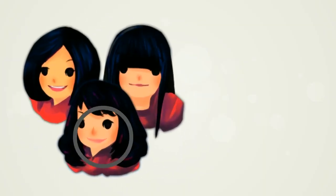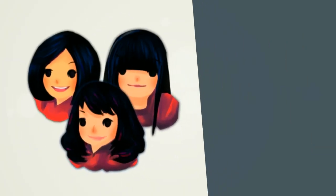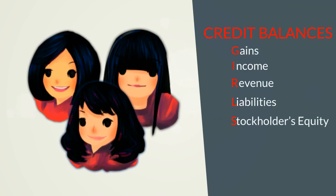The mnemonic GIRLS represents those accounts normally with a credit balance: Gains, Income, Revenue, Liabilities, and Stockholders' Equity.